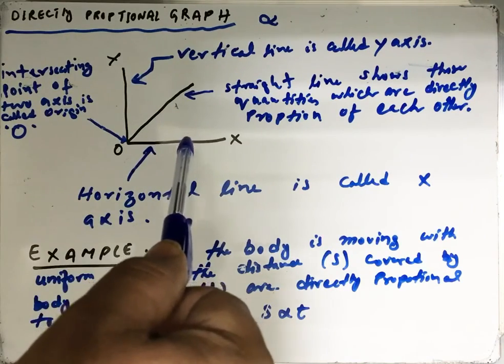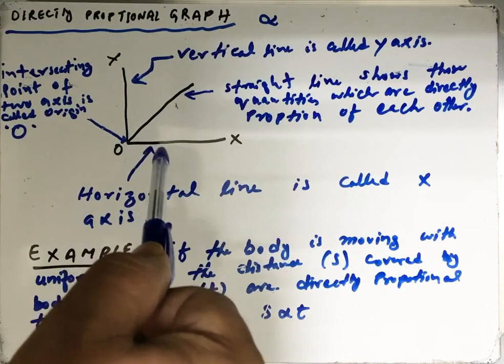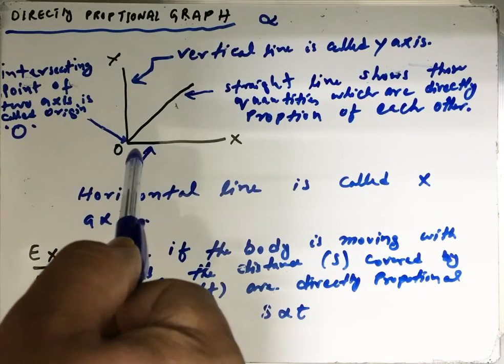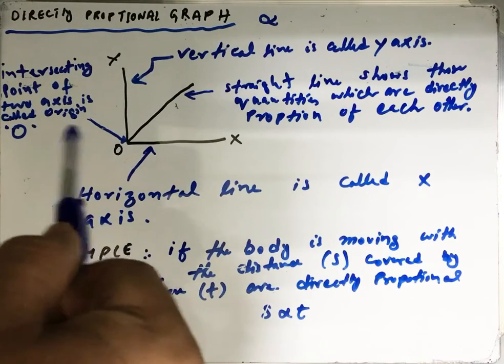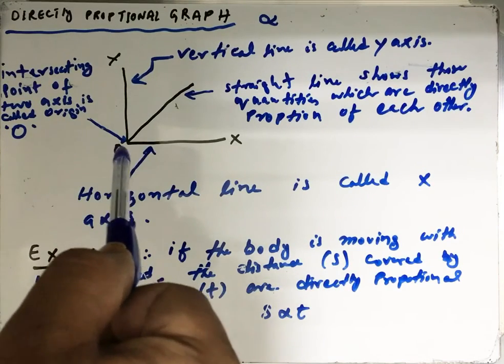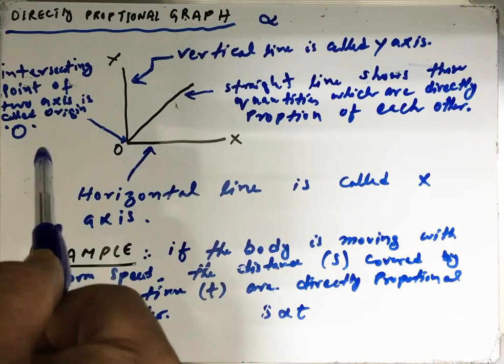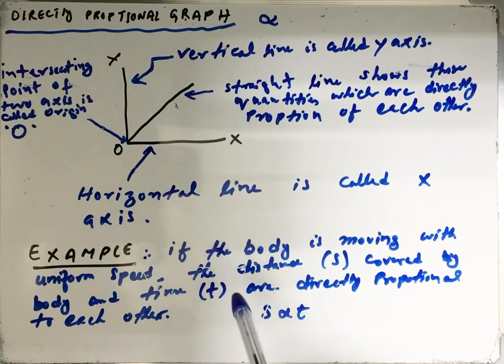The point where these two lines—the vertical line and the horizontal line—intersect is called the origin, denoted by O. Here is an example.